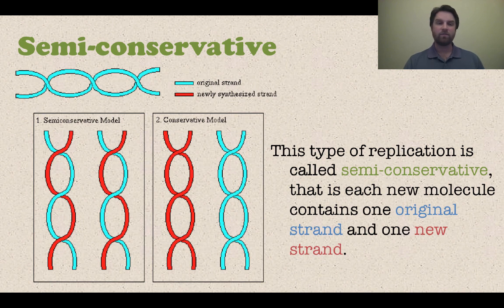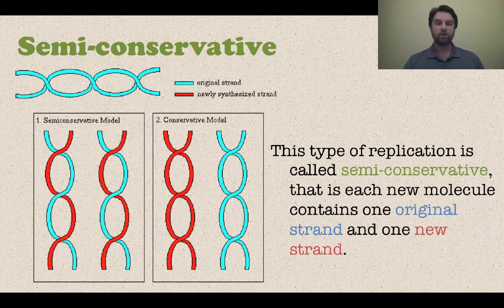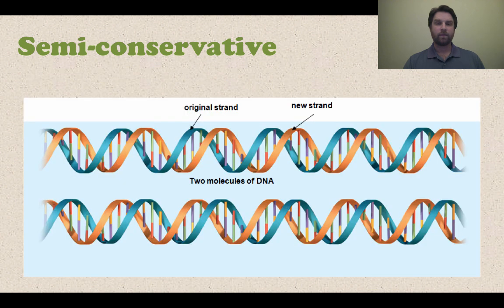That's the semi-conservative model shown in number one — we don't have the conservative model shown at number two. Just remember: semi-conservative means we are conserving part of the original DNA molecule, which is the original strand. There is a better picture showing the original strand in blue and the new strand in orange — two different molecules, each with an original and a new strand.